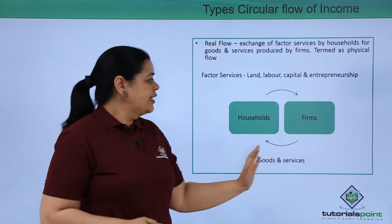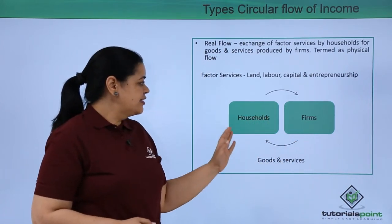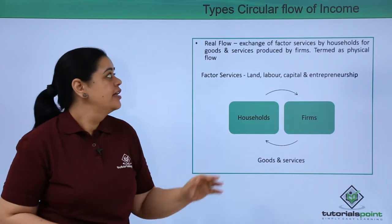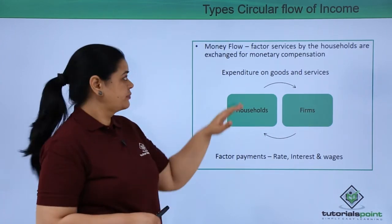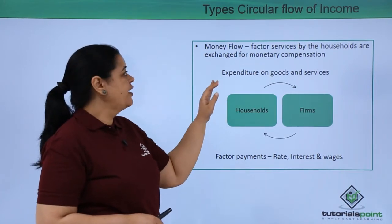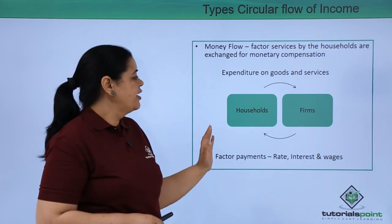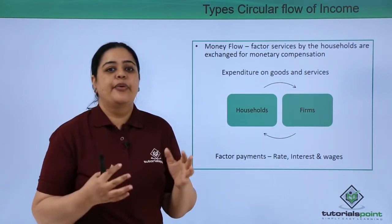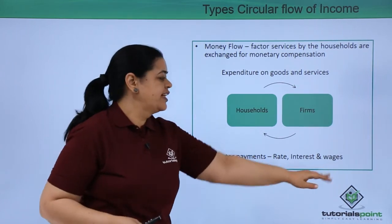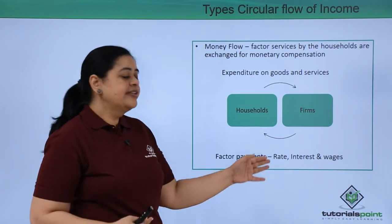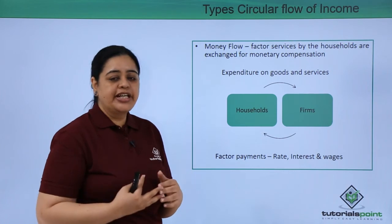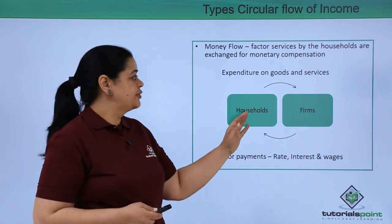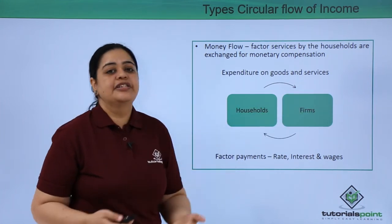The next type is money flow — these are the factor services by the households which are exchanged for monetary compensation. Households expend on the goods and services and the firms would pay rate, interest, and wages. When individuals provide labor, they get wages; land earns rent; capital earns interest. These are the factor payments which flow from firms to households, and then households go and spend on the goods and services.